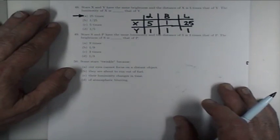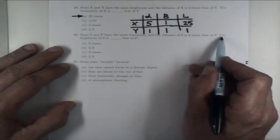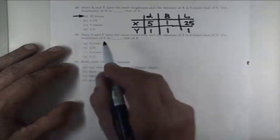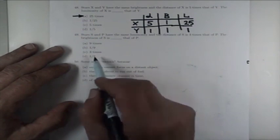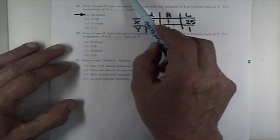Let's try 49. Stars S and P have the same luminosity, so now the luminosity is given, and the distance of S is three times that of P. The brightness of S is nine times one-ninth, three one-third. Now you don't even have to do that, but I'll do it anyway, so that you can see you can use the similar method. Now the luminosity is the same, and you know that the distance of S is three times that of P. Then its brightness is going to be reduced by a factor of nine. Then the brightness of S is one-ninth that of P, but you can do the same thing.